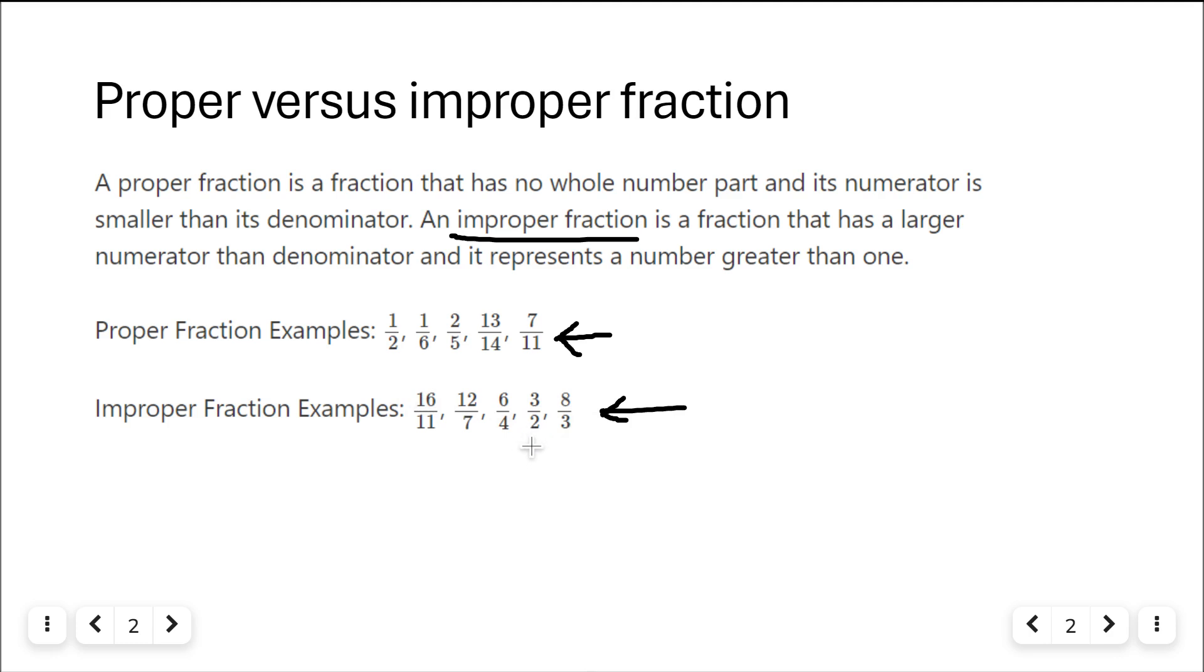That means like for example three over two. You have three parts. You're taking a circle dividing it into two parts, but you have three of them. So that's one part, that's two parts. So now you must have another circle where one part is shaded in, so you have more than one, one filled in circle completely filled in circle, one or more filled in circle.